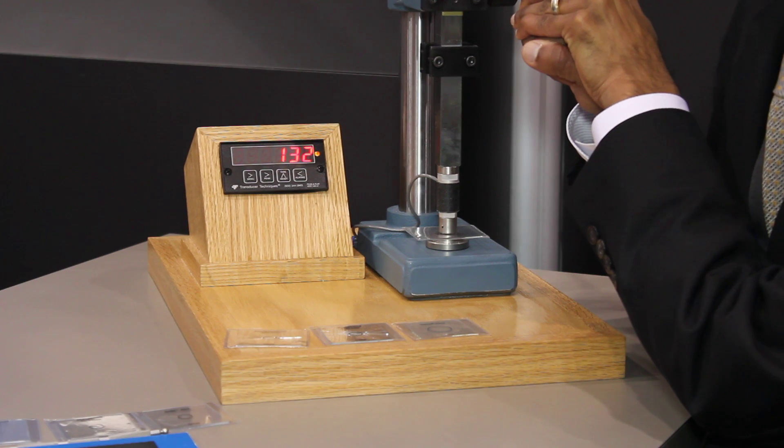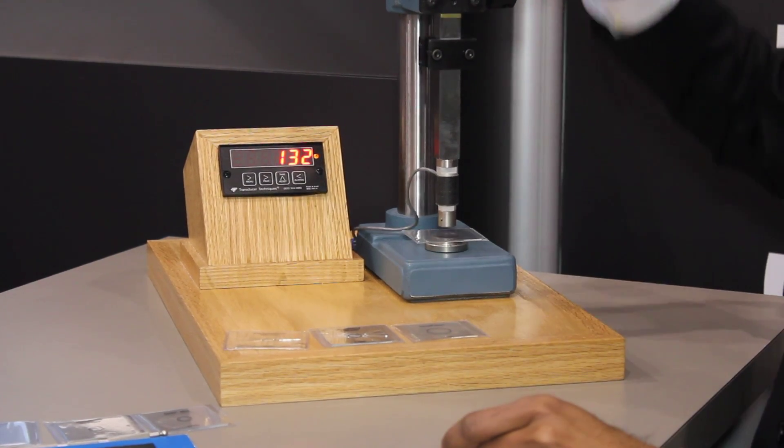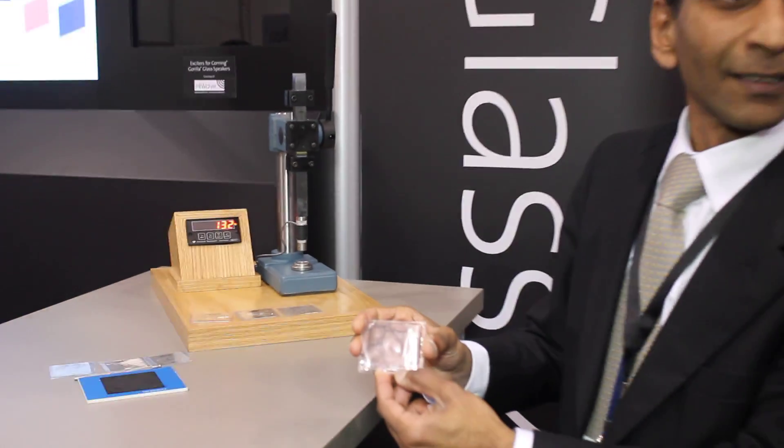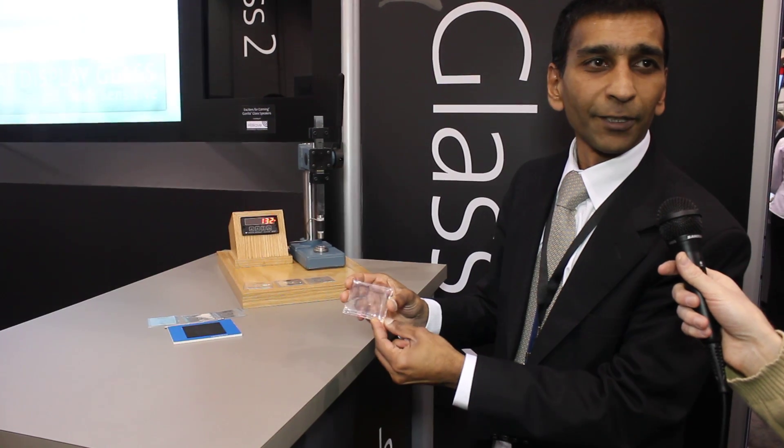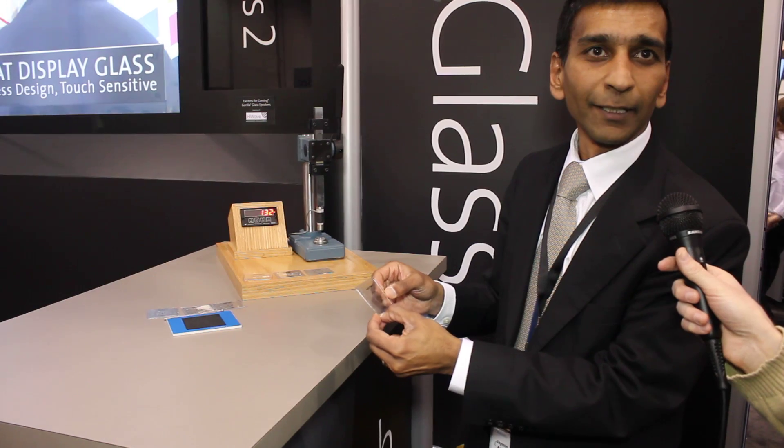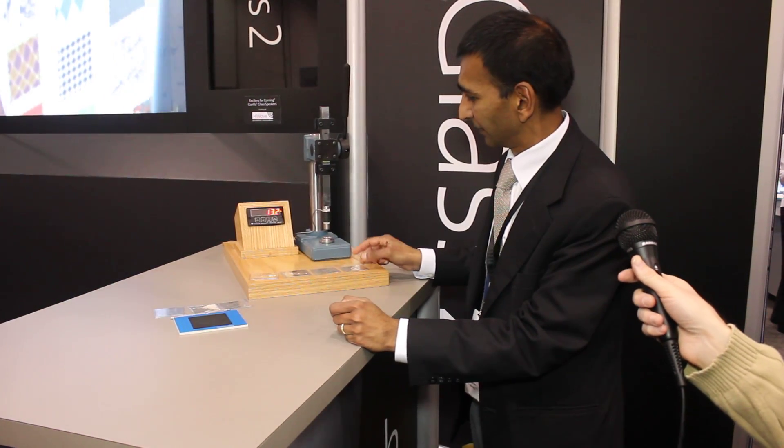Gorilla Glass 2. 130 pounds. I can't break the glass. Gorilla Glass 2. 20% thinner than the current generation Gorilla Glass. Still offers the same damage resistance and allows your products to be thinner. Thank you.